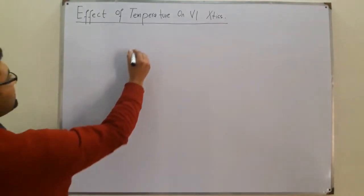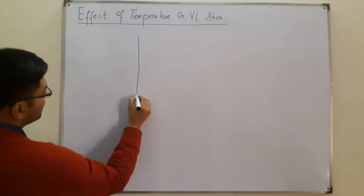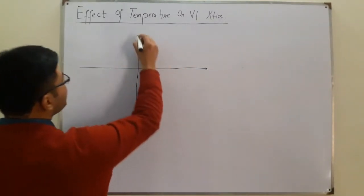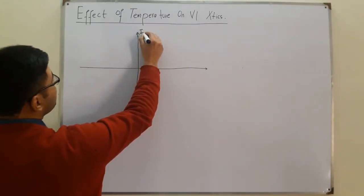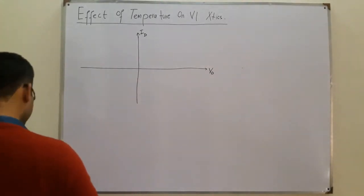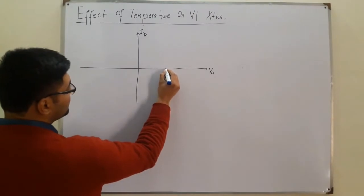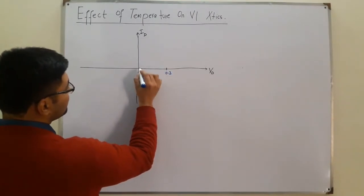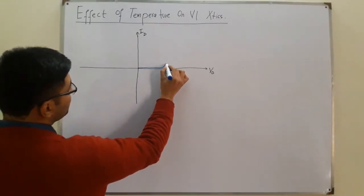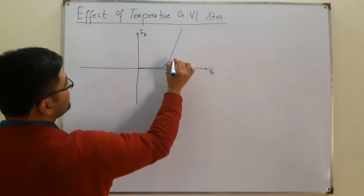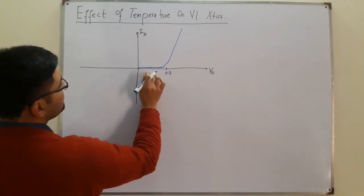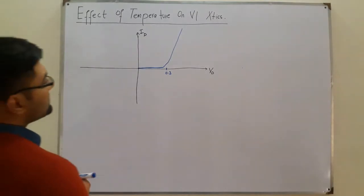From the previous video, we know that if this is ID on the vertical axis and this is VD on the horizontal axis, once the breakdown potential of 0.3 volts is reached, we have initially zero, then a small increase, and then an exponential rise.